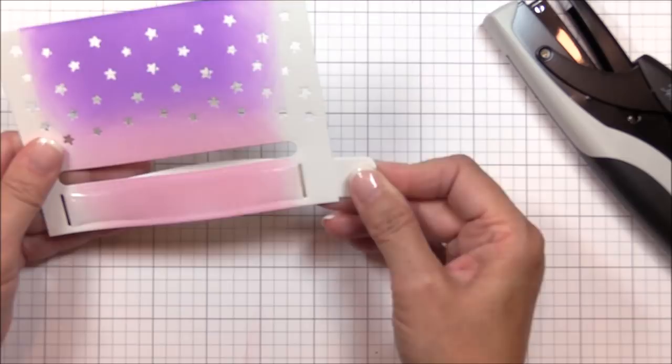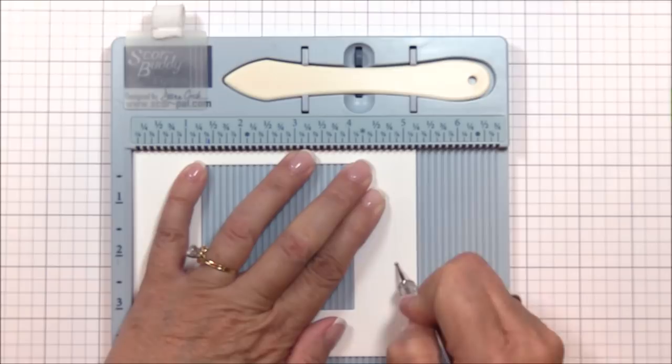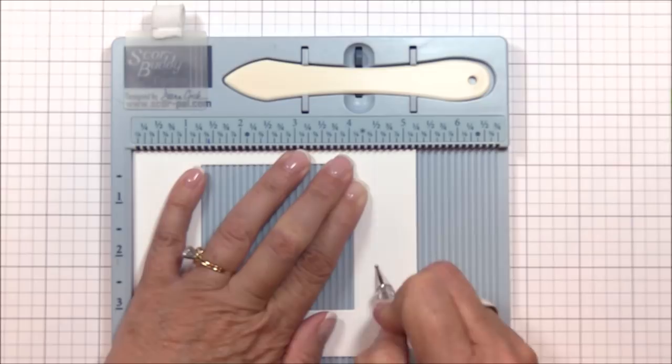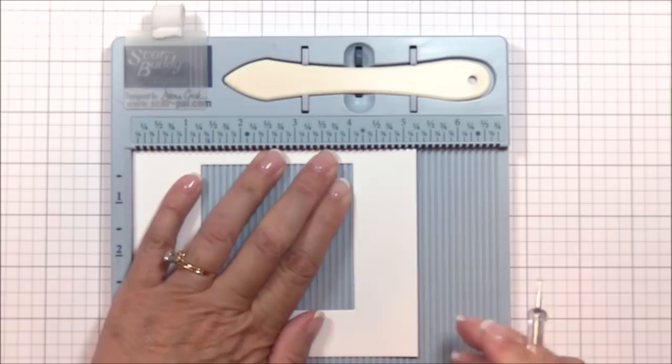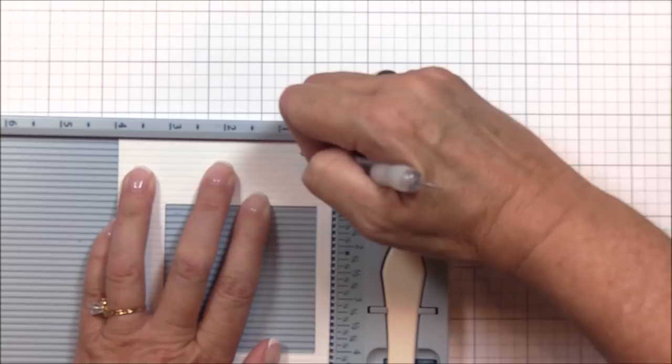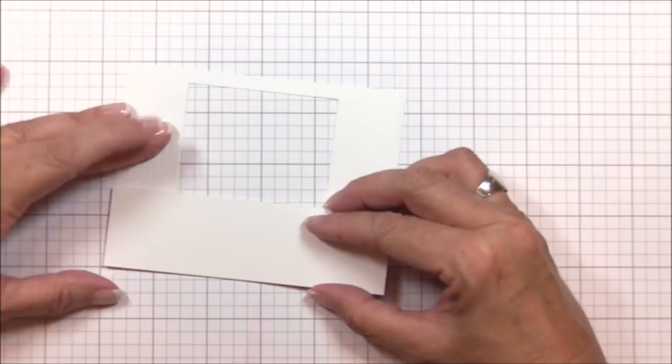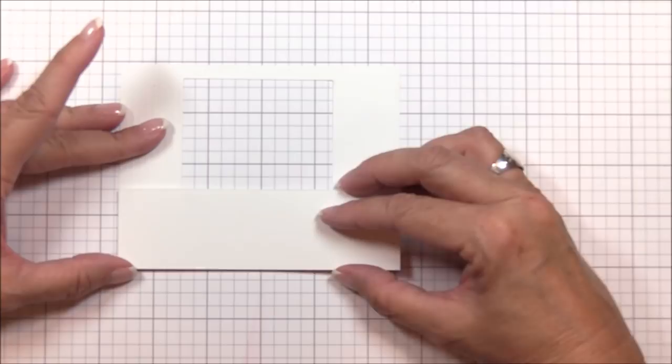I created my front panel by die cutting the largest of the dies from the A2 Rectangle Stack Set 2 dies from a piece of smooth white cardstock. I die cut an aperture using the third largest die from the Square Stack Set 1 dies. I wanted to mimic the embossed lines in the curtains from the Take the Stage dies, so I'm scoring the panel every eighth inch using my score buddy. Here I trimmed a one and a half inch by five and a quarter inch strip that I'm adhering to the back of the front panel with some foam squares. This piece will become my stage and will also help hide the slider track and loop.